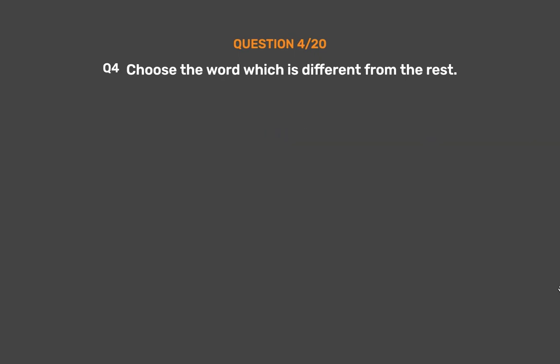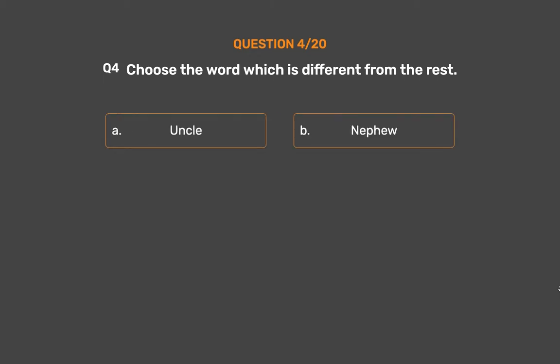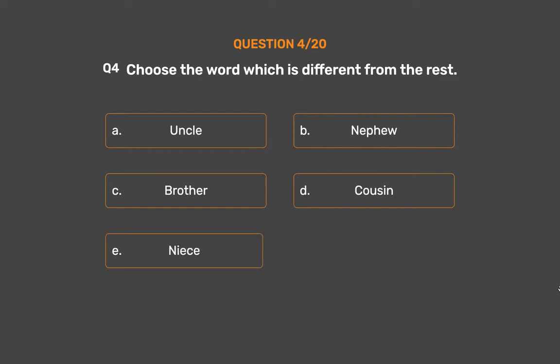Question number 4. Choose the word which is different from the rest. Option A: Uncle. Option B: Nephew. Option C: Brother. Option D: Cousin. Option E: Niece.